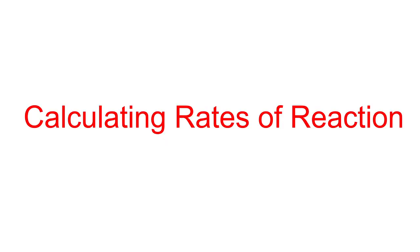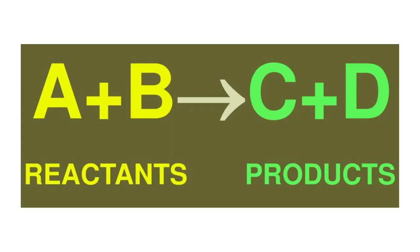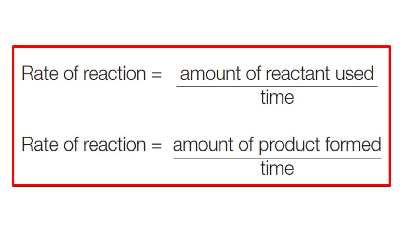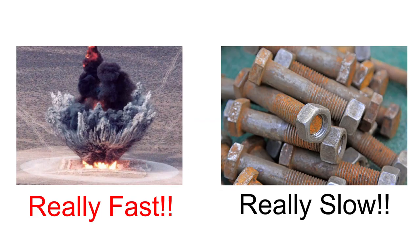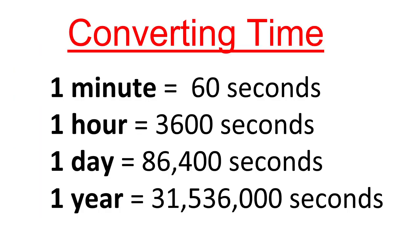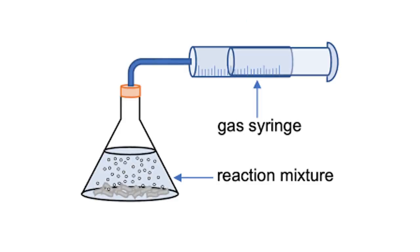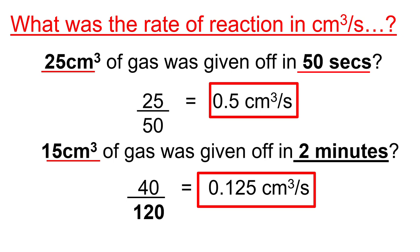You need to be able to calculate the rate of reaction from graphs. There are two ways: calculate the amount of reactant consumed per unit time, or the amount of product produced per unit time. In practice, we nearly always use product per unit time. You must also be able to convert from time units. For example, 27 cm³ in 50 seconds gives 0.5 cm³ per second. If you have 15 cm³ in 2 minutes, convert to seconds first: 0.125 cm³ per second.